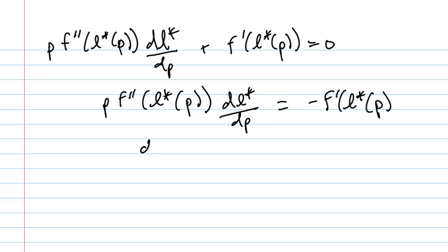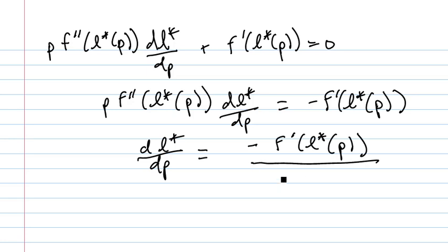And then we get dL star dP. This is the comparative statics result: equals minus F prime of L star of P over P F double prime of L star of P. Now here's the key thing. We actually don't care too much about the magnitude of this result, but we care about the sign.